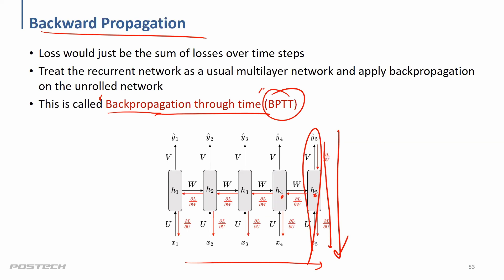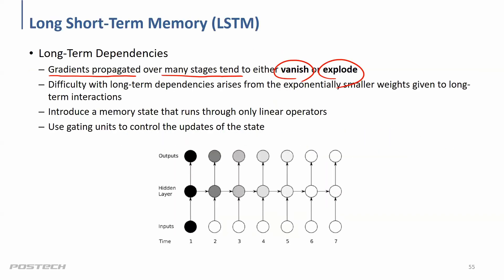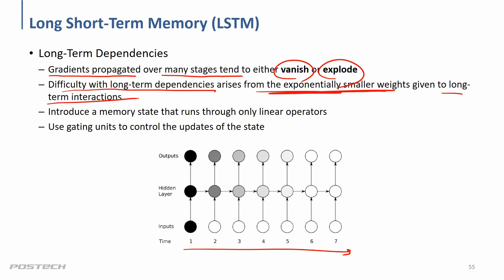Even though we have ReLU-type activation functions, if we have a long sequence window we still do many multiplications in that direction, making the vanishing problem worse. With long-term dependency, the influence decays almost exponentially, giving smaller and smaller weight to long-term interactions. That's why RNN is extremely difficult to train.